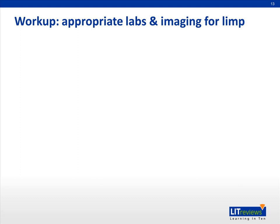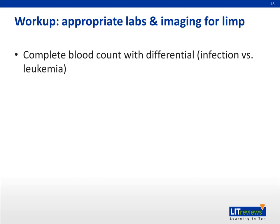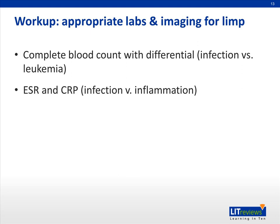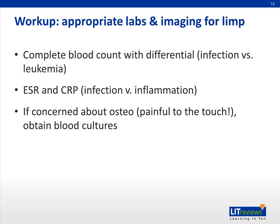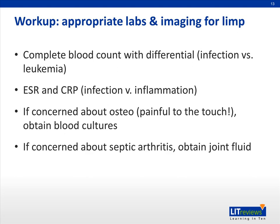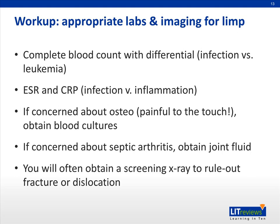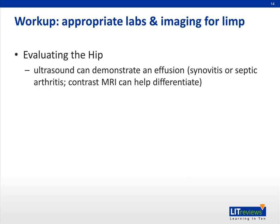When thinking about laboratory and imaging for the limp, you're likely to start with a complete blood count and differential for nearly every child, which helps you think about infections or leukemia. You'll also want to obtain an erythrocyte sedimentation rate and a C-reactive protein, which can help you differentiate between infection versus inflammation. If you're concerned about osteomyelitis, which would be very painful to the touch, you'll want to obtain blood cultures. If you're concerned about septic arthritis, you'll want to obtain joint fluid. You'll often want to obtain a screening x-ray just to rule out a fracture or dislocation. In the case of the hip, an ultrasound can help you demonstrate an effusion, though it can't necessarily differentiate between synovitis versus septic arthritis, and a contrast MRI would be useful in helping to differentiate between these two.